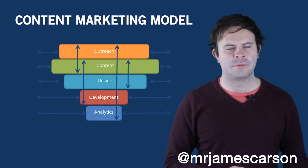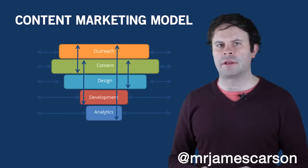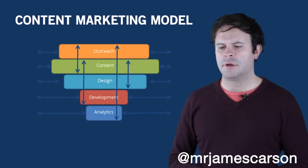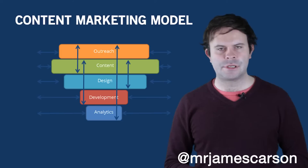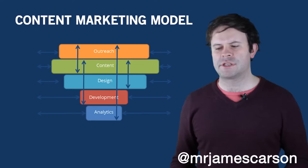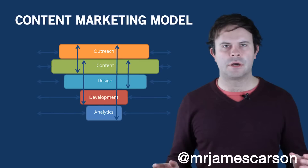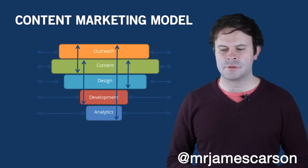These upward arrows explain the relationships between different departments. Analytics affects everything because what you can't measure, you can't improve. Outreach is only really reliant on content because you're syndicating that content. The sideward arrows represent the investment in different departments — the bigger the size of the layer, the more investment in it. In this example, content is the largest, about twice or three times as big as development.